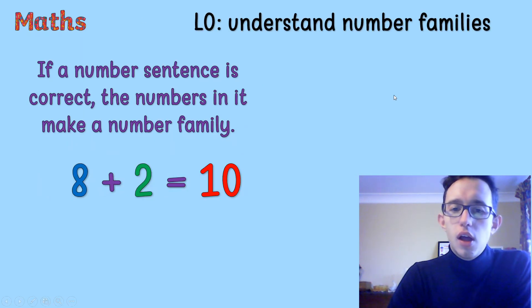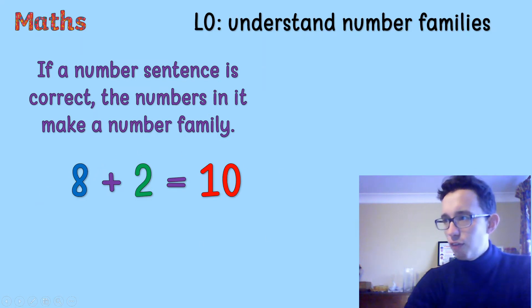So what we know is if a number sentence is correct, so this number sentence here, if this is correct, then all of these numbers go into a number family. They're in a number family because they all connect to each other in a different way.